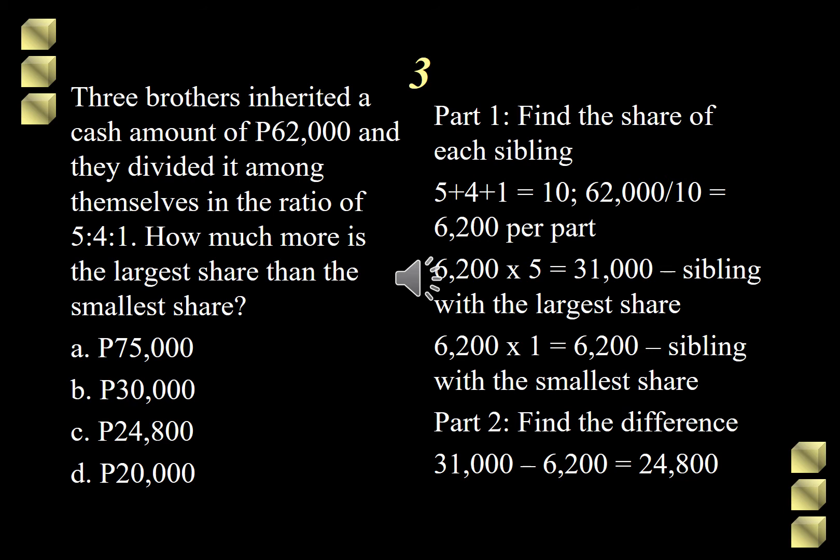6,200 is the value of one share. To find the amount of the largest share, I simply multiply 6,200 by 5 since 5 is the ratio of the largest share. So 6,200 times 5 is 31,000. Next is to get the value of the smallest share. Multiplying 6,200 by 1 still gives me 6,200.